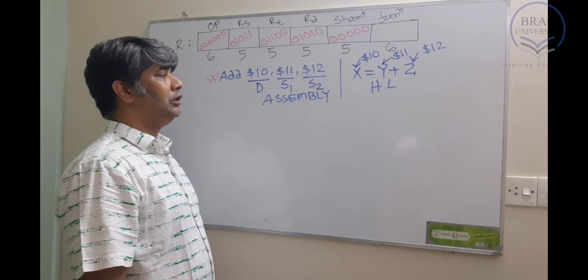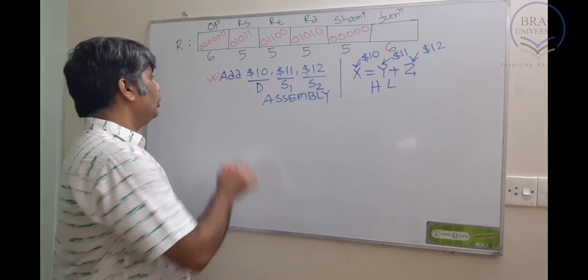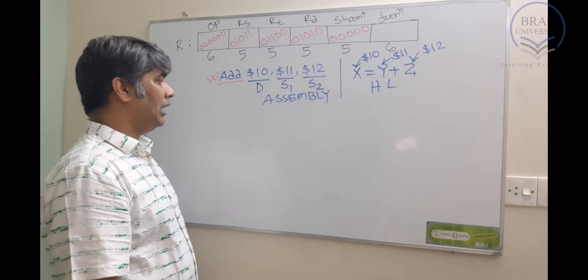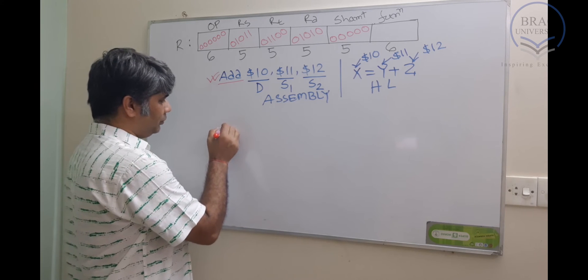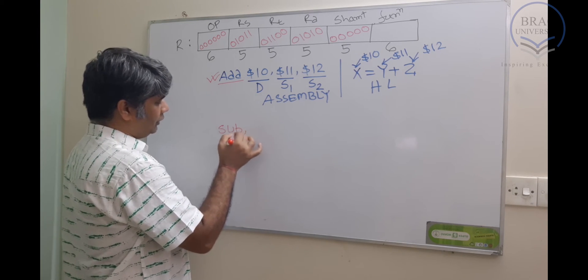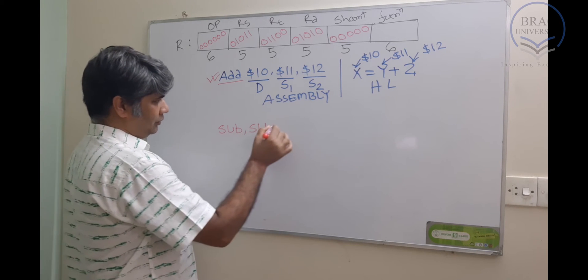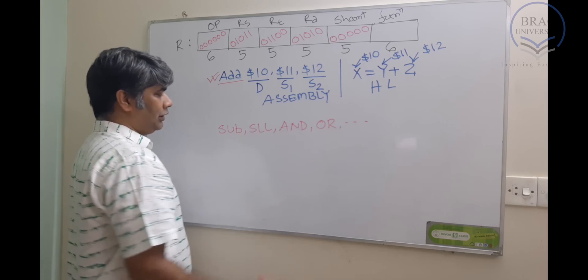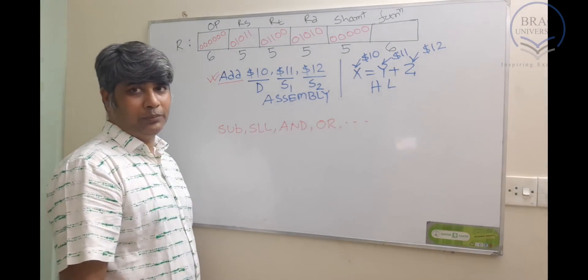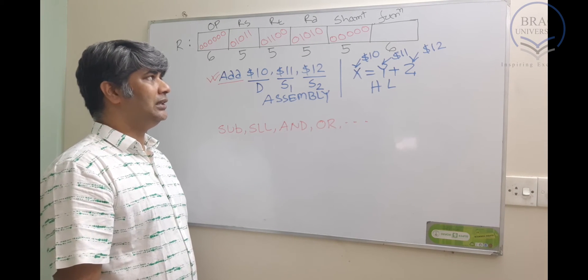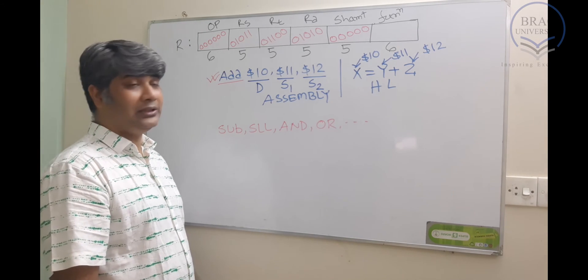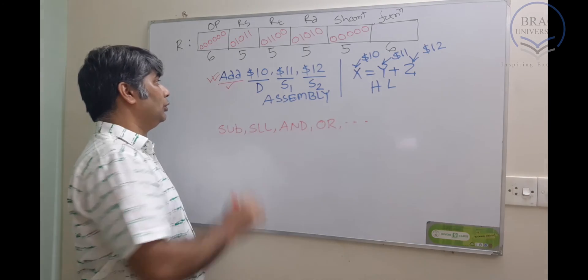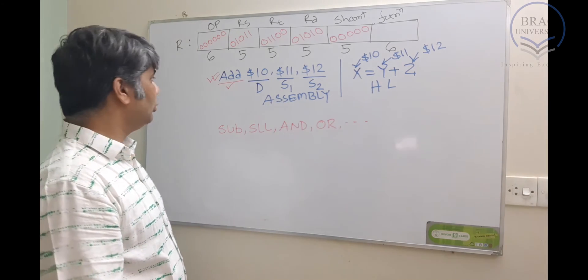Now we are left with the function field where we need to have six bits. We are not going to memorize the function value for add. There are other R-type instructions, for example sub, slt, and, or, and so on. But we're not going to memorize this function field because these function fields are going to be in the question. We'll see the integer value of those function bits. Since we do not know, let's put this as undefined.